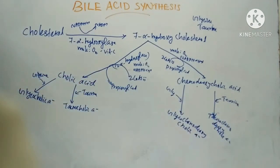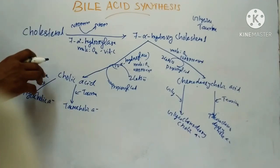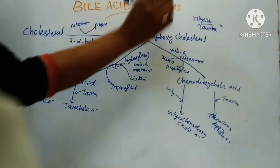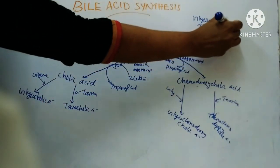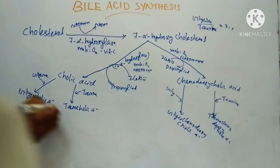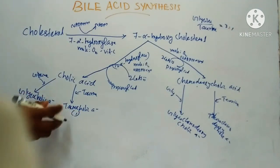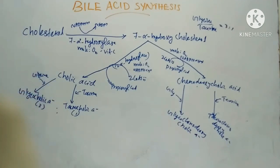This is the third step. The ratio of glycine to taurine conjugates is 3:1, so glycocholic acid is three times more than taurocholic acid.